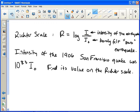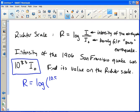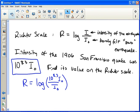Well, this right here is our intensity for the earthquake in 1906. So we have R equals log of I, that's 10 raised to the 8.3 I0 over I0. Because it's 10 raised to the 8.3 times more powerful than I0. That's why I draw it that way. So if you notice, the I0's cancel out. And you just get 10 raised to the 8.3.